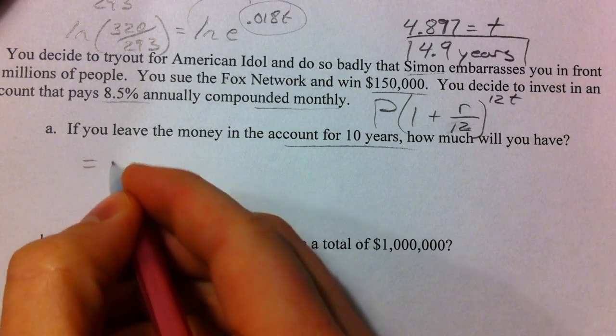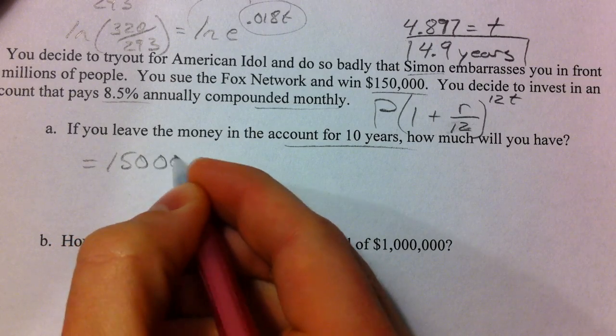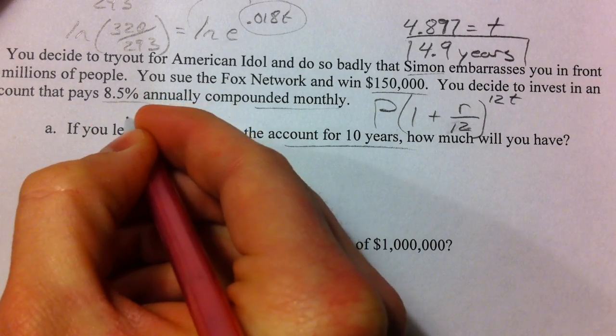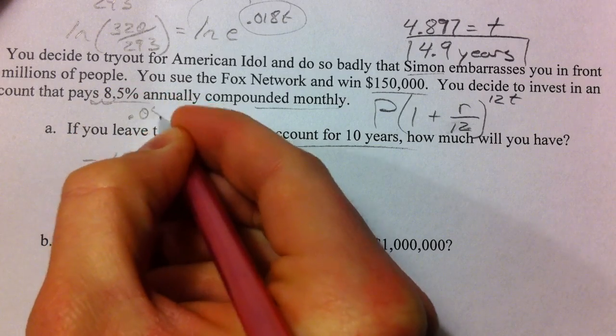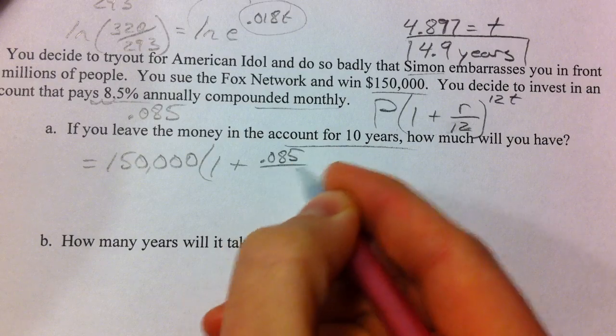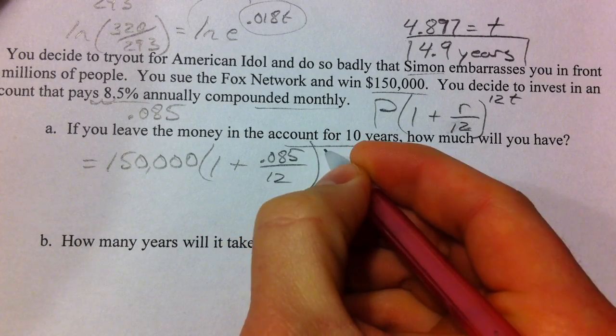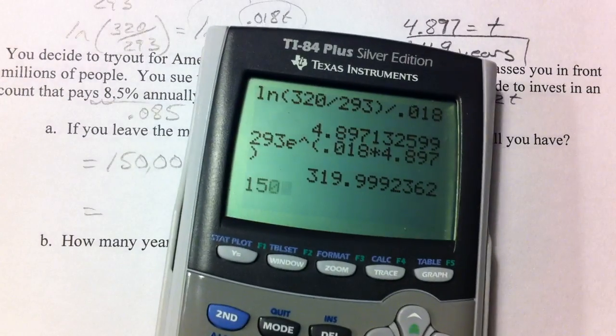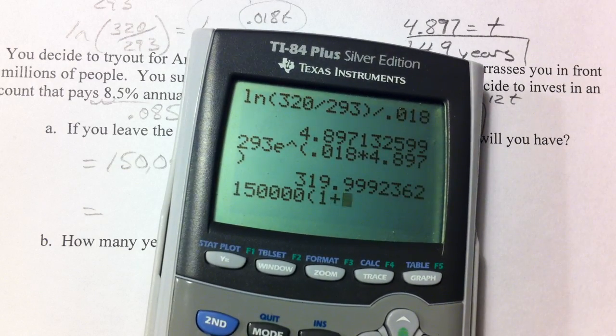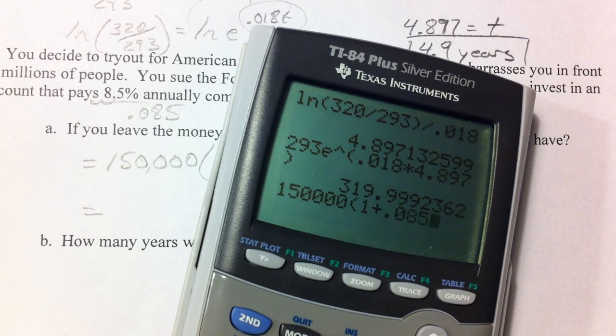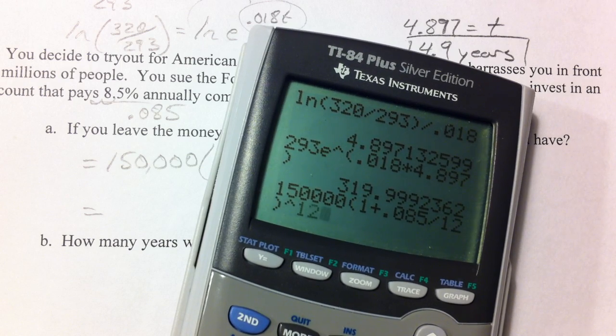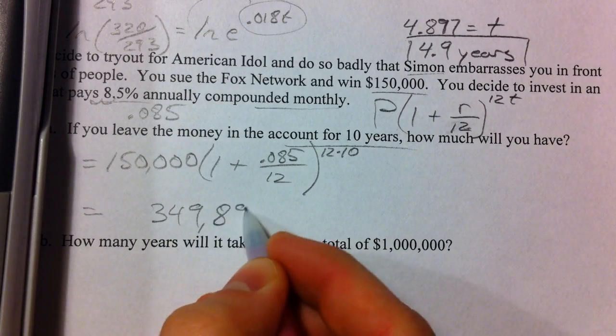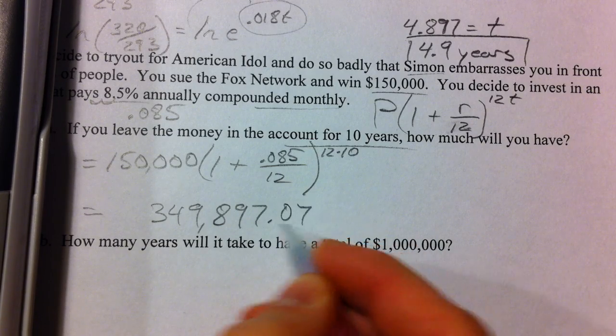So if we leave the money in the account for 10 years what do we get? Well we get $150,000 and we multiply that by 1 plus our interest rate 8.5 so that's .085 over 12 raised to the 12 times 10 we're leaving it in there for 10 years. So 150,000 times 1 plus .085 divided by 12 raised to the 120 power so we get $349,897 and 7 cents.